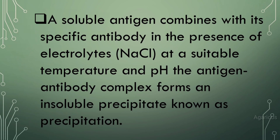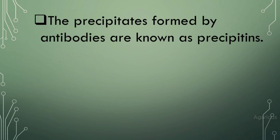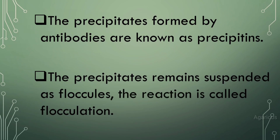A soluble antigen combines with its specific antibody in the presence of electrolytes at a suitable temperature and pH. The antigen-antibody complex forms an insoluble precipitate known as precipitation. The precipitates formed by antibodies are known as precipitants. When the precipitates remain suspended as floccules, the reaction is called flocculation.